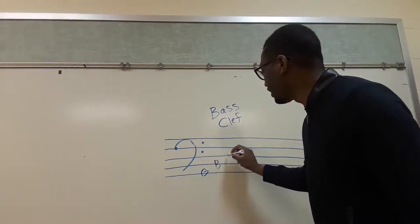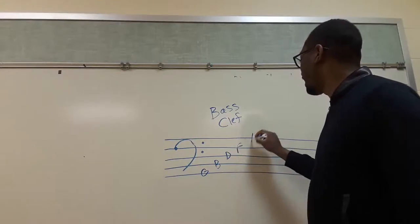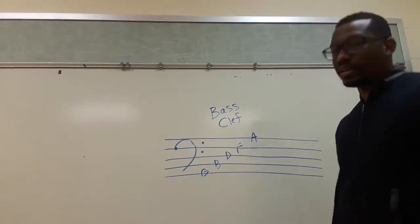And we have B in the second line, D for the third line, F for the fourth line, and A for the fifth.